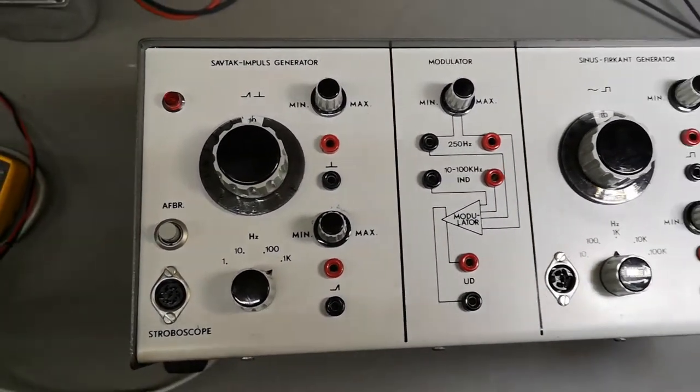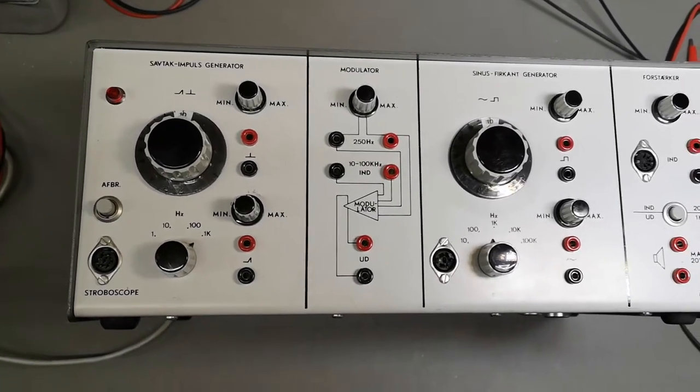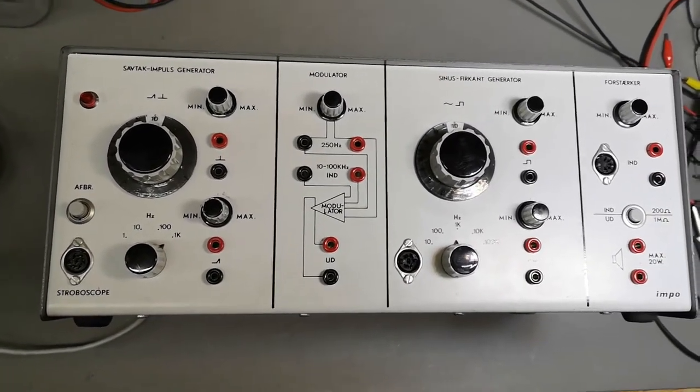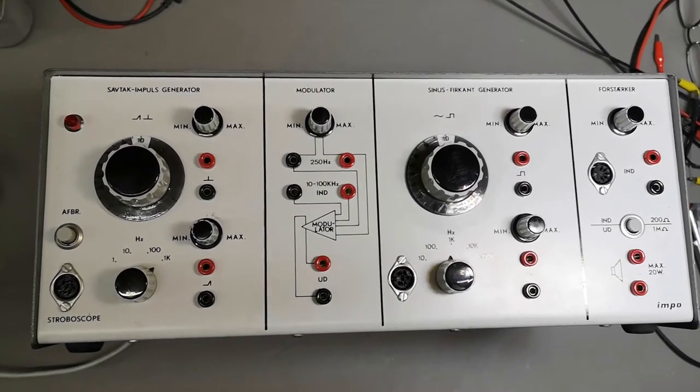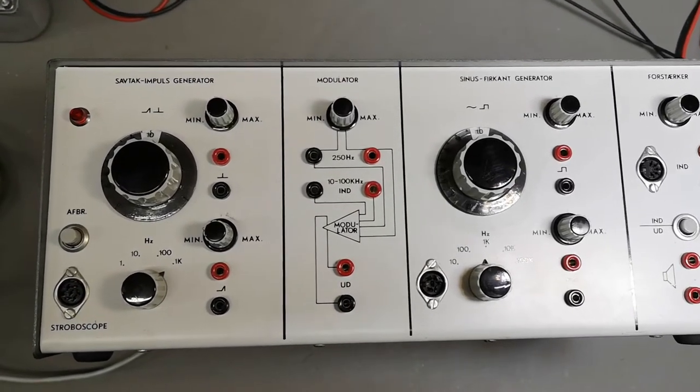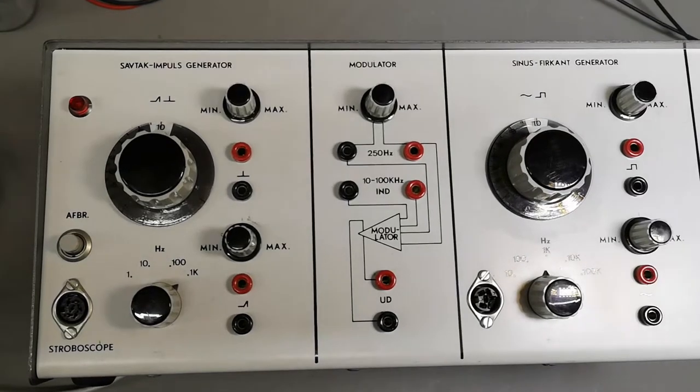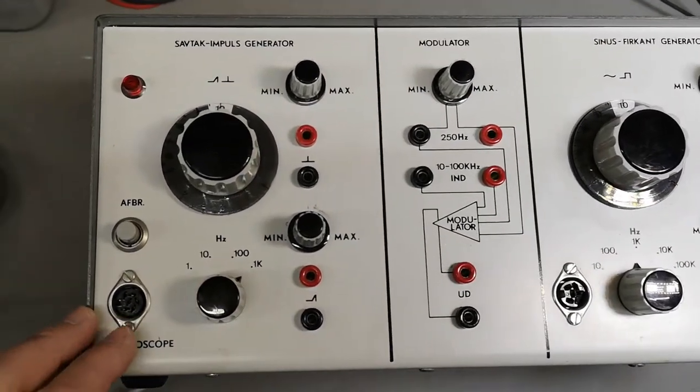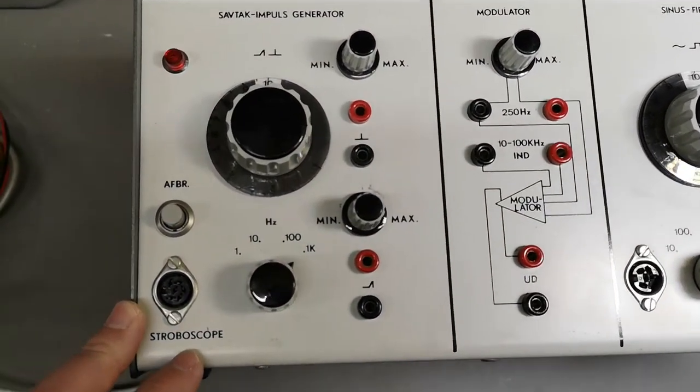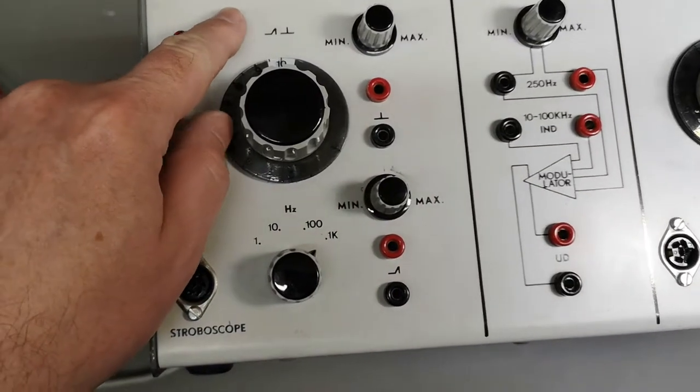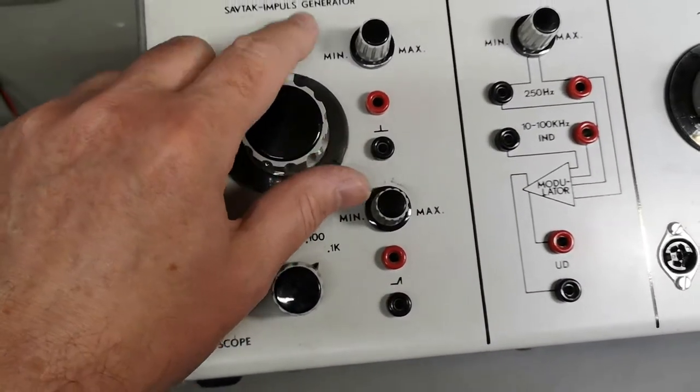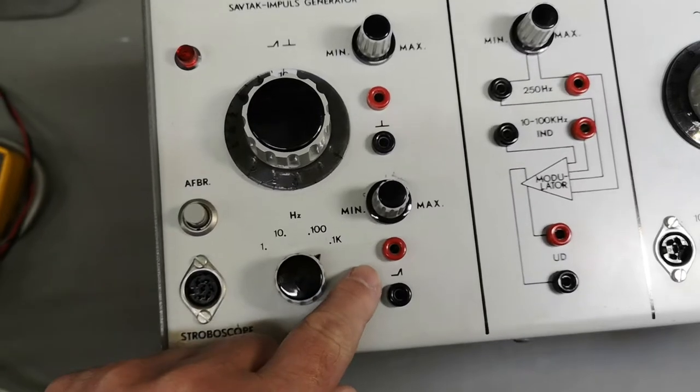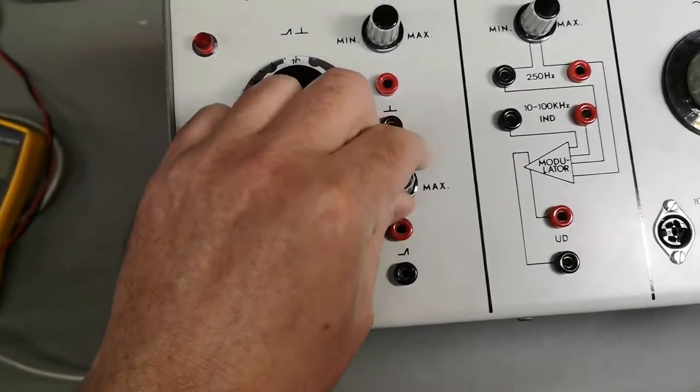I think I would just call it a multi-lab school test equipment. If you know what this is called, please tell us. So there's a sawtooth or impulse generator. You can select the frequency and the level here.